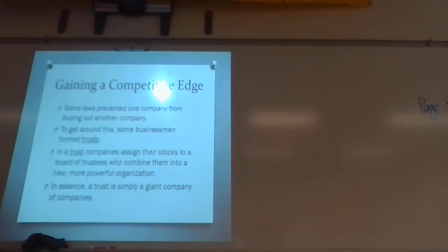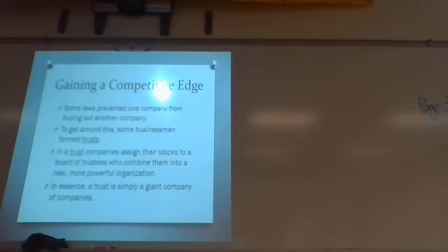If the number one leading rubber maker and the number one leading tire company came together to develop one company, they could dominate and squeeze everybody else out — because of the power they have collectively, they can do things other people can't do. So a trust is just a giant group of companies coming together to try and dominate a market — essentially, it's just a big monopoly.